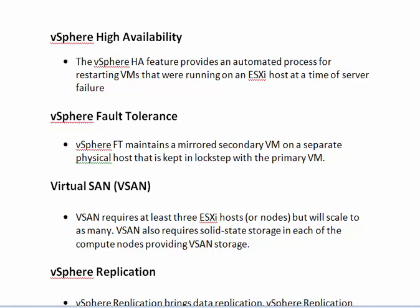Next we can see about vSphere Fault Tolerance. It is used to overcome the limitations of vSphere High Availability. In vSphere High Availability there is a server downtime when using that feature. But in Fault Tolerance, we won't see any server downtime because Fault Tolerance provides a mirrored secondary VM in a separate physical host, which is used to back up the virtual machine when there is a failure in the primary VM.